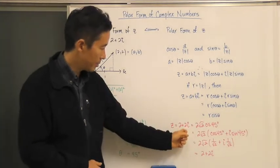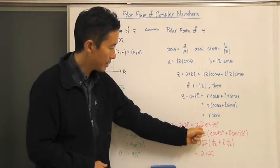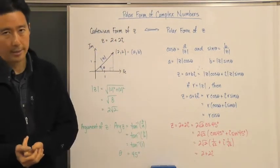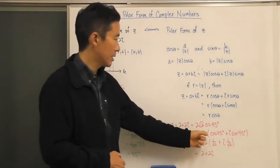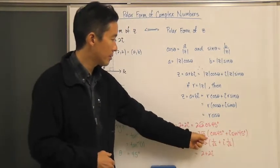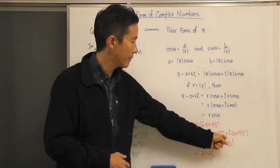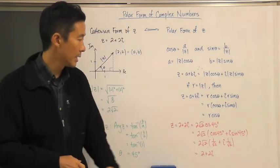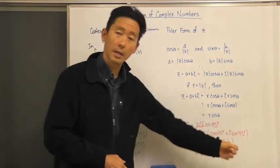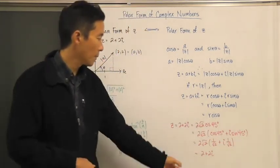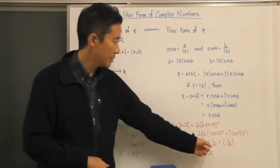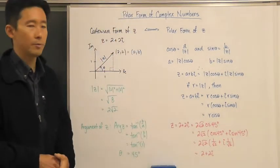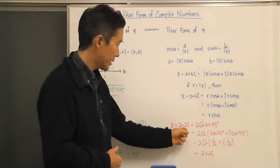So 2 plus 2i is exactly the same as 2√2 · cis(45°). To verify this, we expand: 2√2 times the quantity cosine 45° plus i sine 45°. We know cosine 45° and sine 45° both equal 1 over root 2. If we distribute 2√2 into the bracket, we get 2 plus 2i — exactly the same as our original Cartesian form. So these are exactly the same, just different forms.